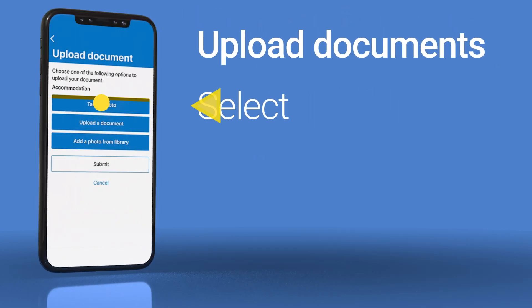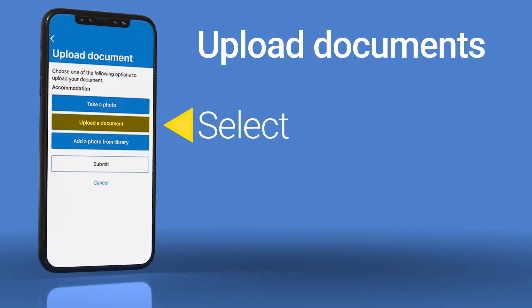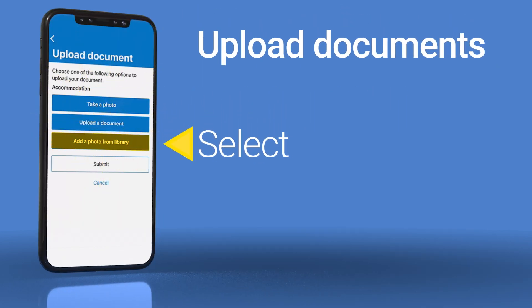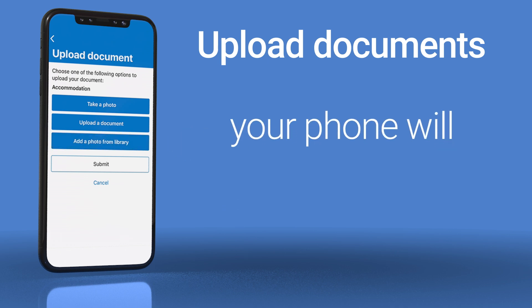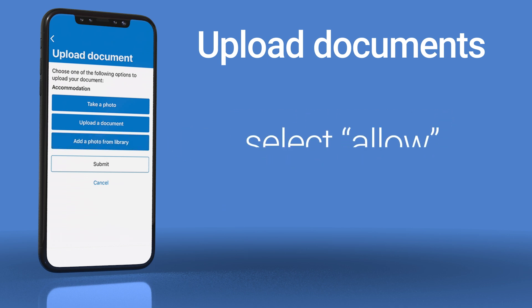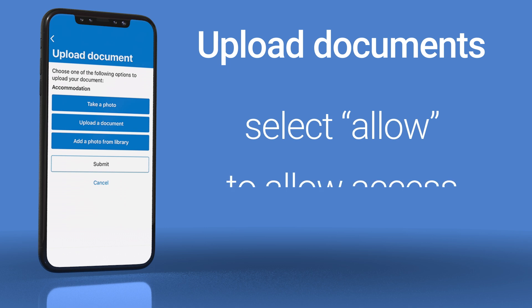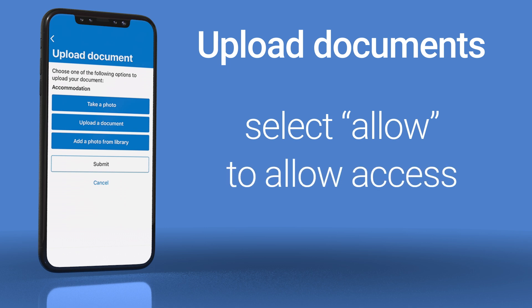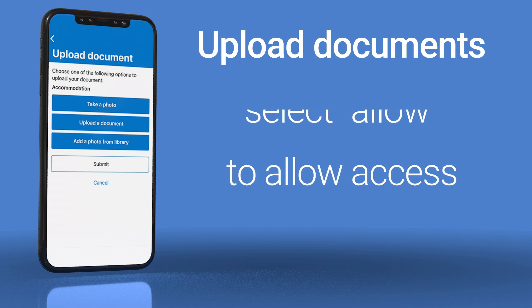You can select Take a photo, upload a document, or add a photo from Library. If you choose to upload a document, your phone will access where your saved documents are. To take a photo or choose one from your phone, you'll need to select Allow if your device asks for approval.